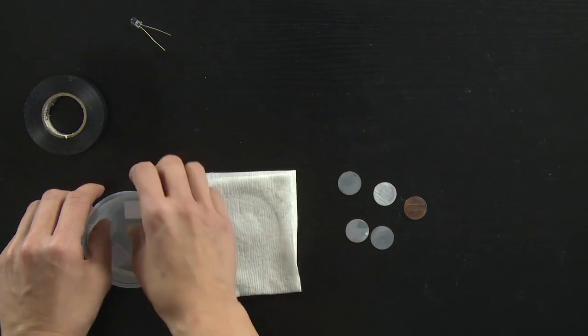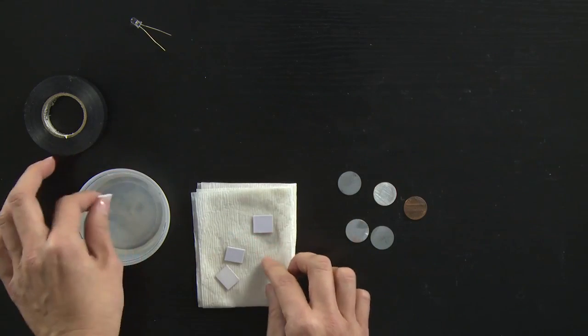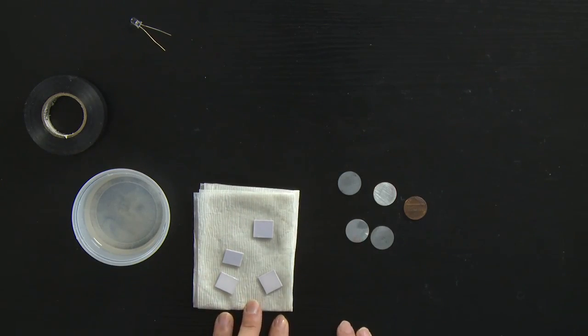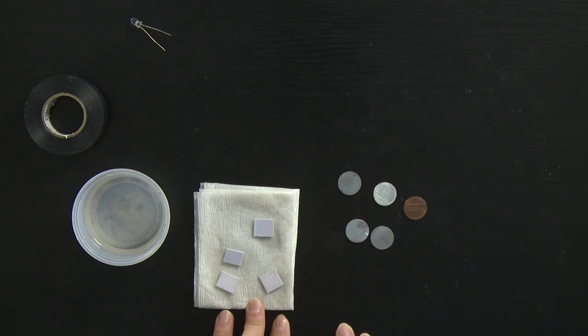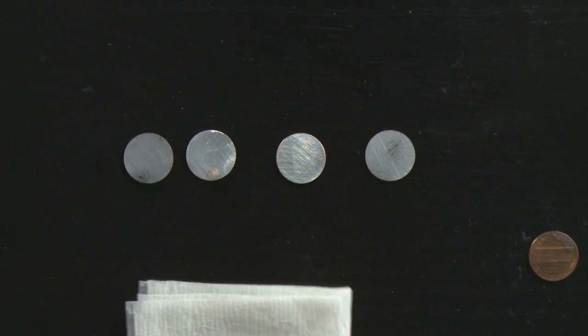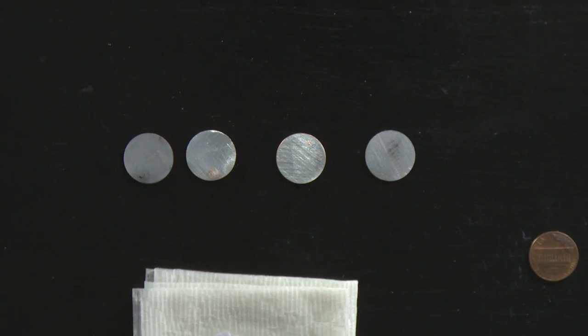Go ahead and take the four mat board squares and dry them off on your paper towel. And we're going to start building the individual cells that will combine in series to create your battery.